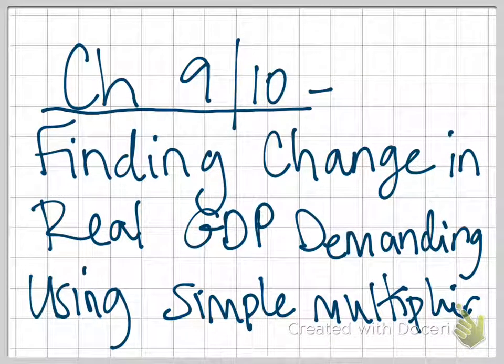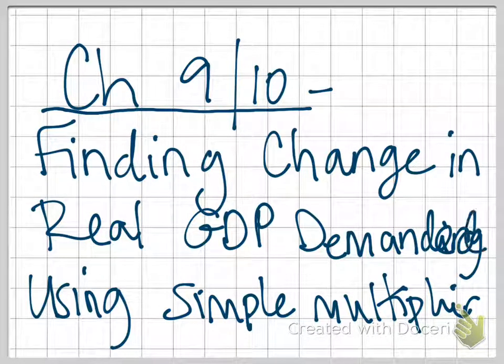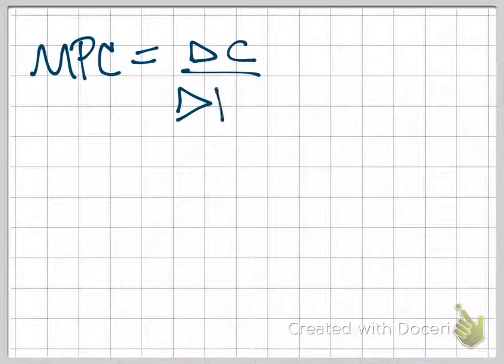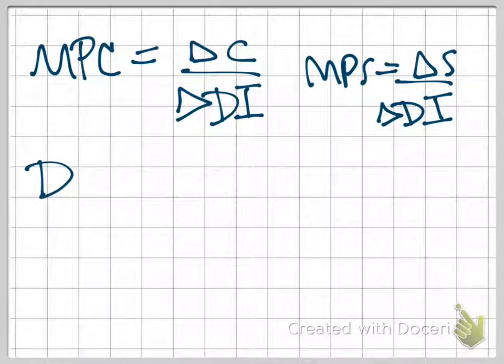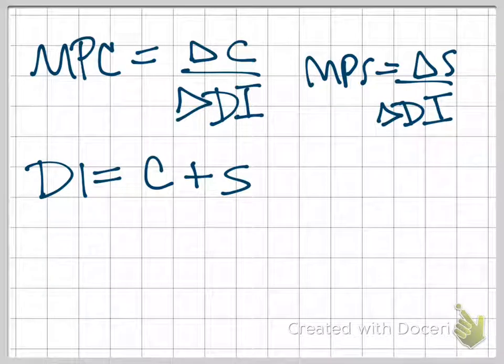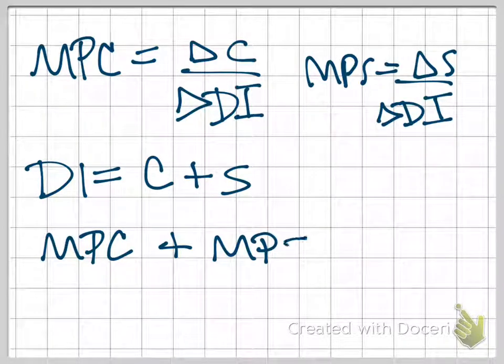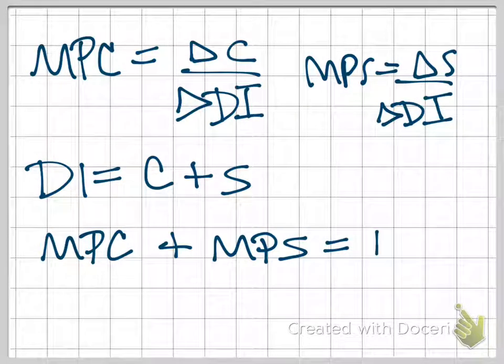I'm going to show you how to find the change in real GDP demanded using our simple multiplier. So from the last video we saw that our MPC is the change in consumption over the change in disposable income. Our MPS was the change in savings over the change in income. Because DI equals C plus S, then we also knew that the fraction of our new income spent plus the fraction of our new income that we save will forever and always equal 1.